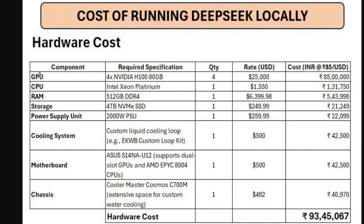You would also require a few more components for handling such large hardware. A cooling system is needed as overheating might occur — that costs about $500, around ₹42,000. A motherboard of the highest quality that supports dual-slot GPUs would cost about $500, around ₹42,000 to ₹43,000. A chassis to keep everything together would also cost around $500, which is about ₹41,000.